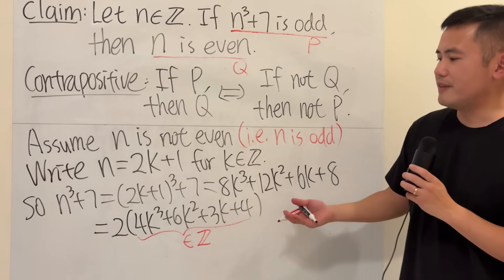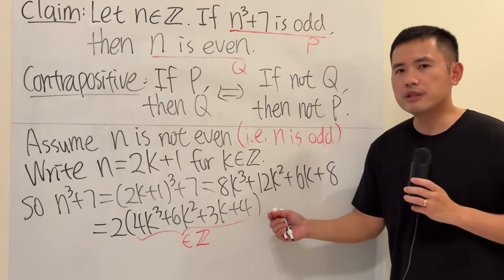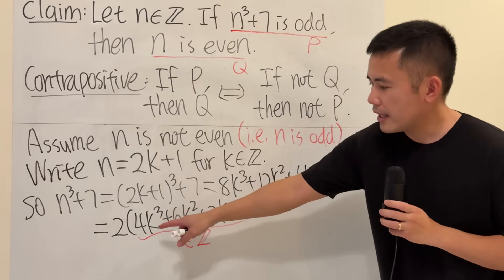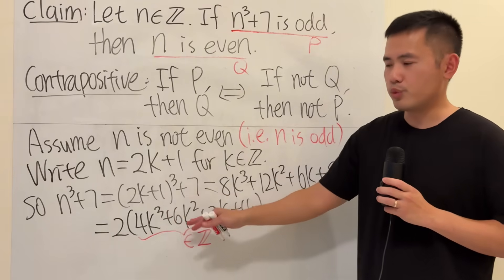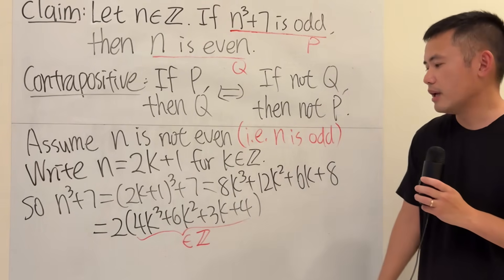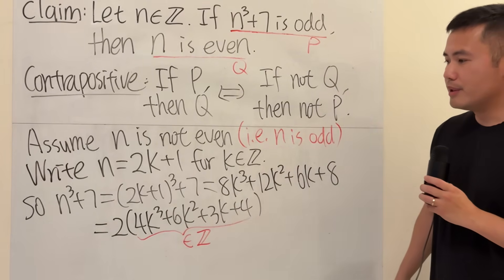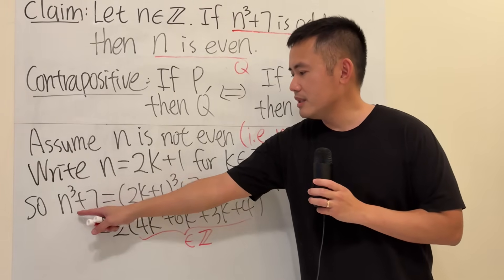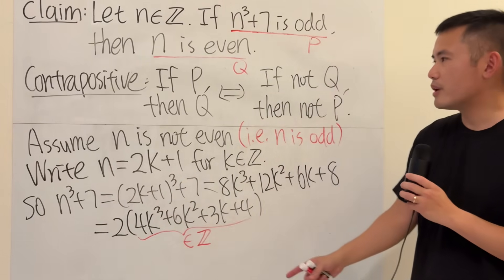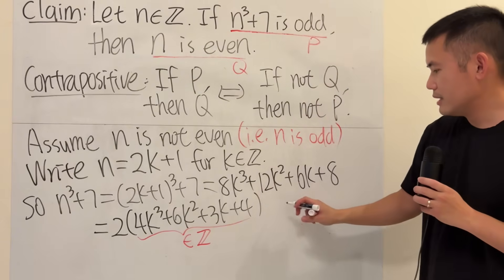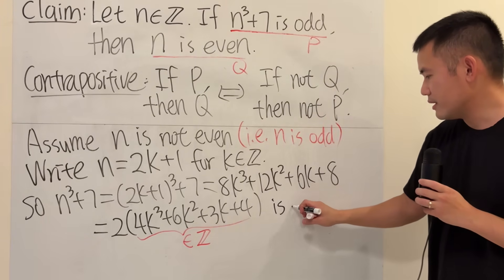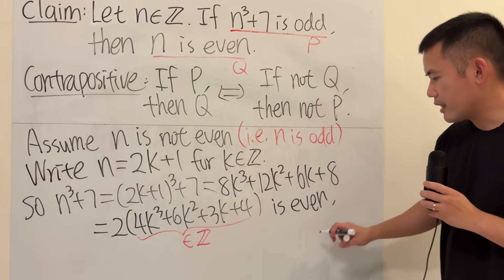And if you want to sound fancy, you can say that integers are closed under multiplication and addition, and of course, raise to a third power, raise to a second power, yes, multiply as well. So, as we can see, this is 2 times an integer. That means this is even.